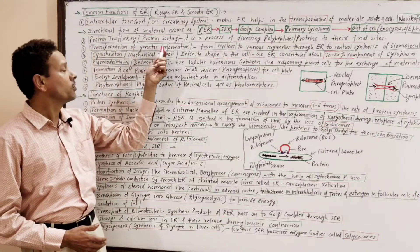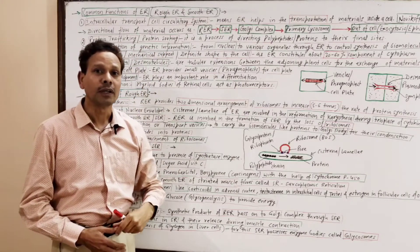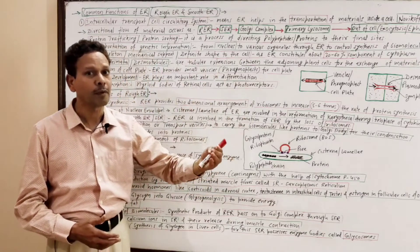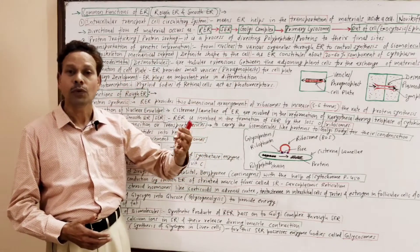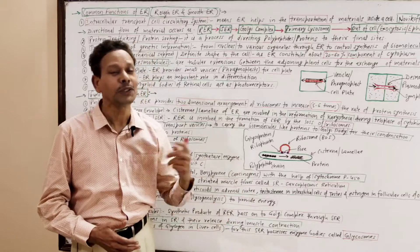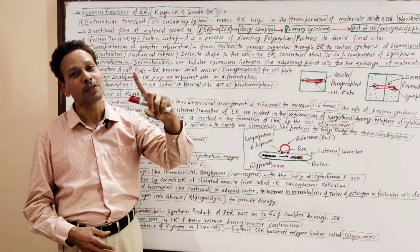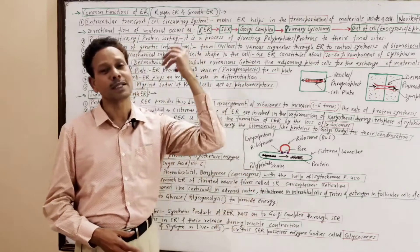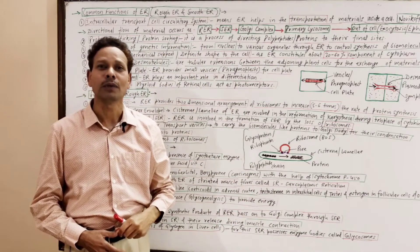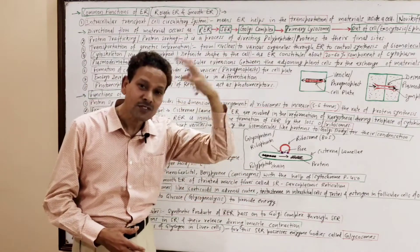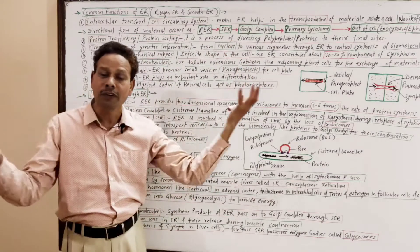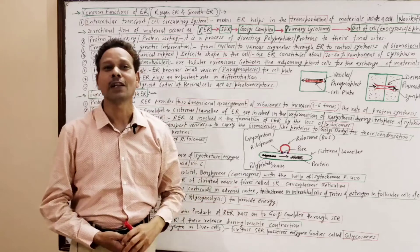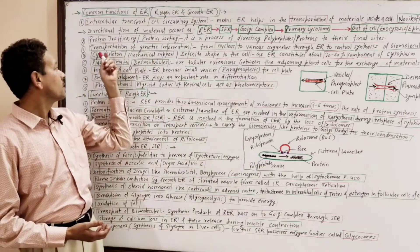Transportation of Genetic Information: the nucleus transfers its genetic information to different cell organelles through the endoplasmic reticulum. This means the nucleus controls the synthesis of biomolecules by passing its genetic information to different cell organelles through the endoplasmic reticulum.